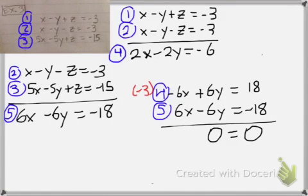If you get a statement like this, where 0 equals 0, that is absolutely true. Always true. This is the type of problem that has infinite solutions.